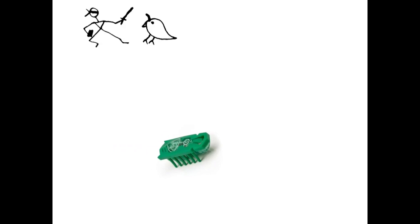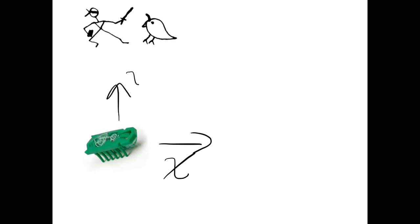The hex bug can move in a couple dimensions—it can move in the x dimension and it can move in the y dimension, right? That's where our image is going to show. We want to apply the Kalman filter in two dimensions. These two dimensions are the x and y direction.